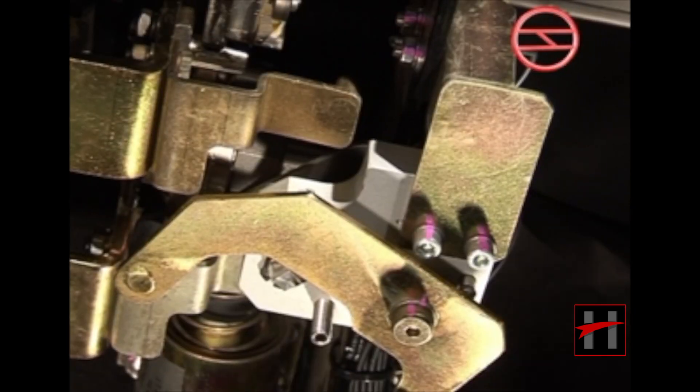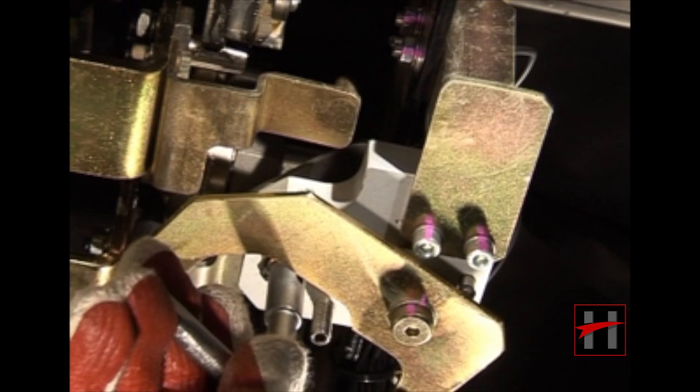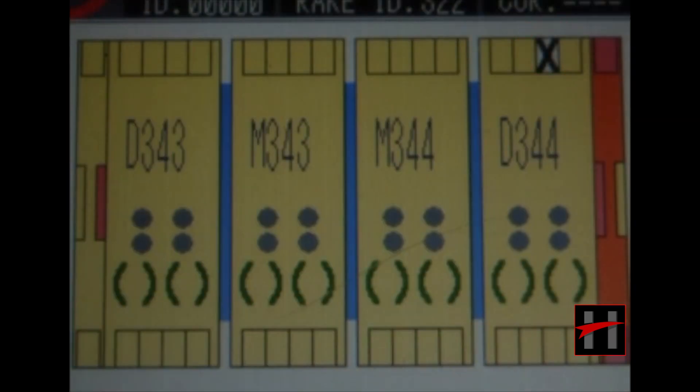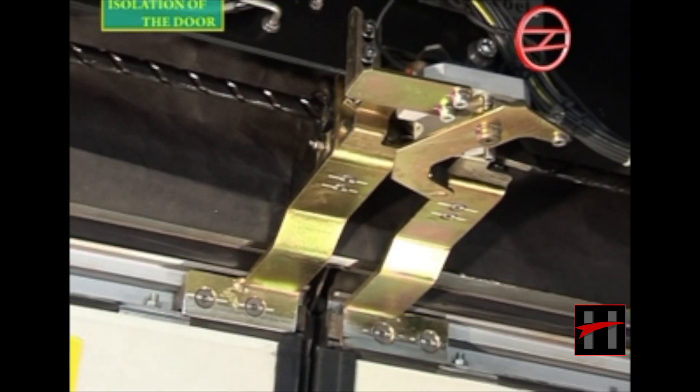In order to isolate a door, rotate the isolation switch 30 degrees clockwise. This will disconnect supply of the DCU and thus the door leaves cannot be opened.